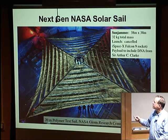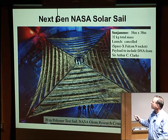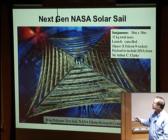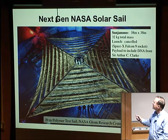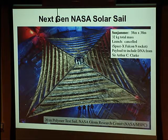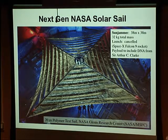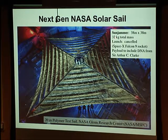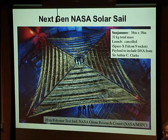One of the future missions NASA hoped to launch is called the Sun Jammer — a 38 by 38 meter aluminized polyimide sail. It was scheduled to launch but was recently canceled, partly because sailcraft are so new that there's reluctance to launch anything that might fail — they want to completely understand deployment and attitude control first. Interestingly, the name comes from Arthur C. Clarke's science fiction novel, and the mission would have included some of his DNA.